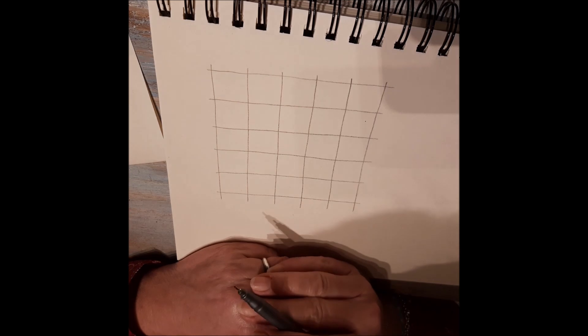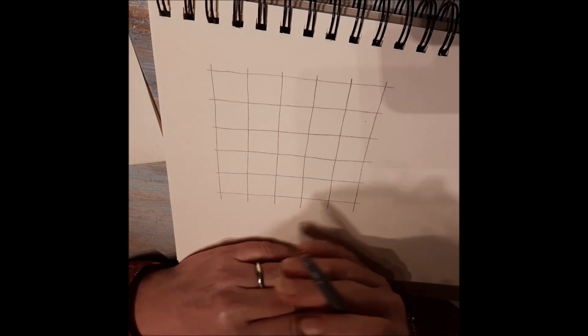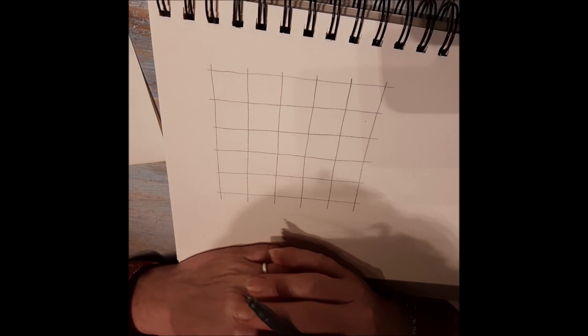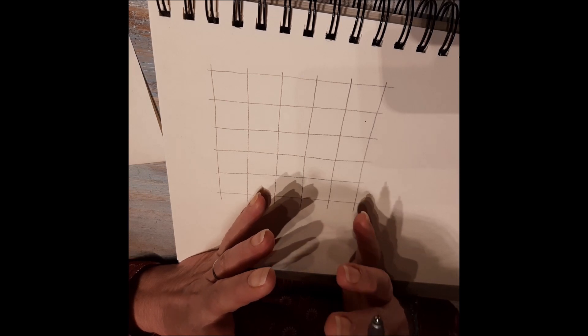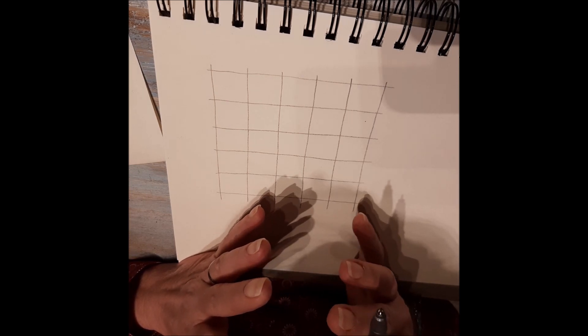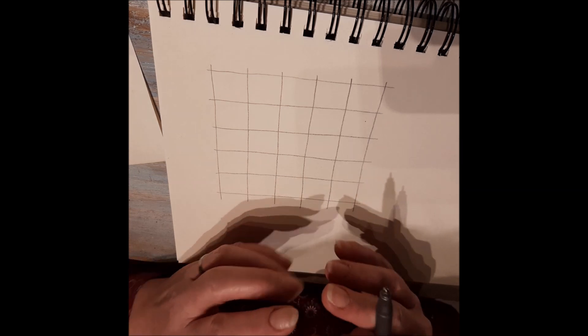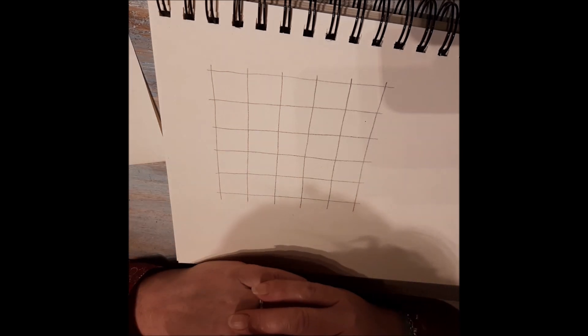It starts off with a squared grid. I've already drawn it. And with this pattern, each line you draw, you have to think: start at one-third of a line. I'll show you.